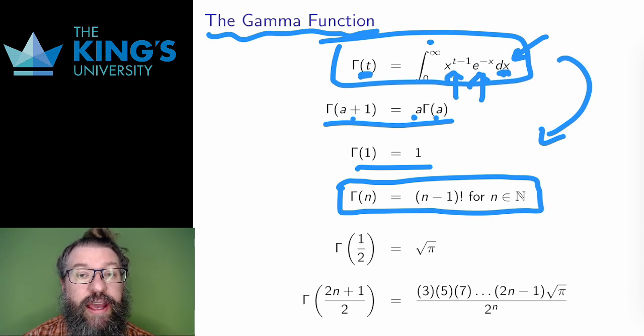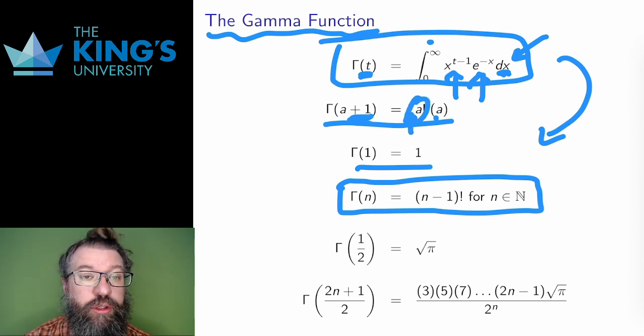The first property gives this. To get to n, I just add 1 n many times, and each time I multiply by the previous number in the gamma function. This is exactly building the factorial. Since it starts at 1 instead of 0, this builds n minus 1 factorial. So the gamma function is the function that extends the factorial. The factorial isn't defined for non-integers, but the gamma function fills it in between the integers to make the factorial a continuous function, which is very cool.